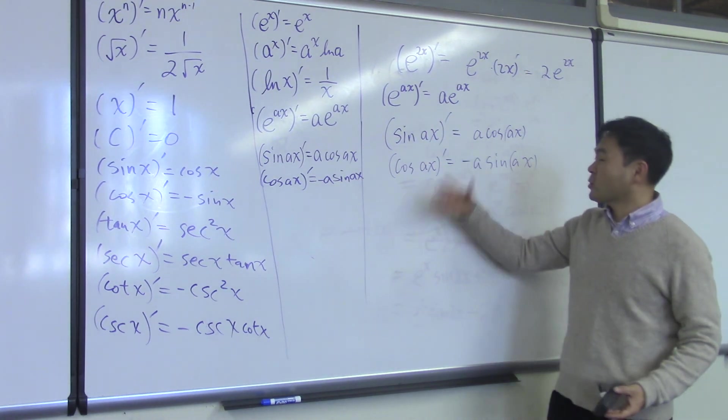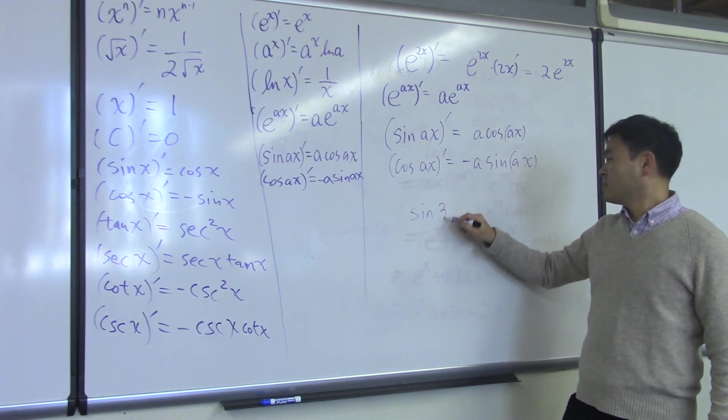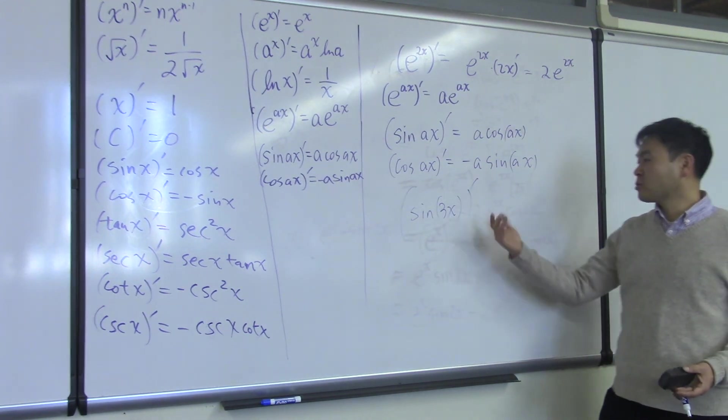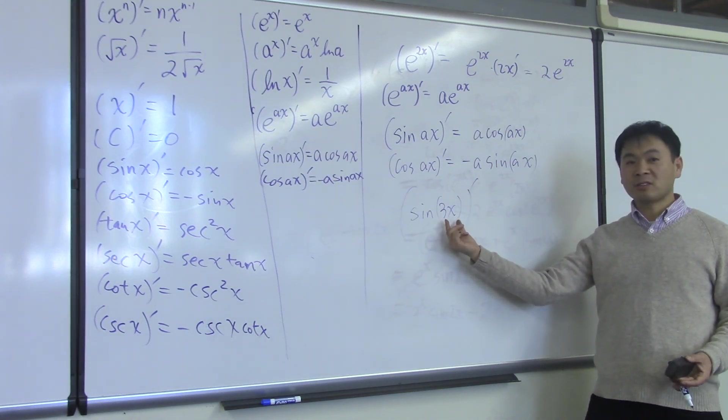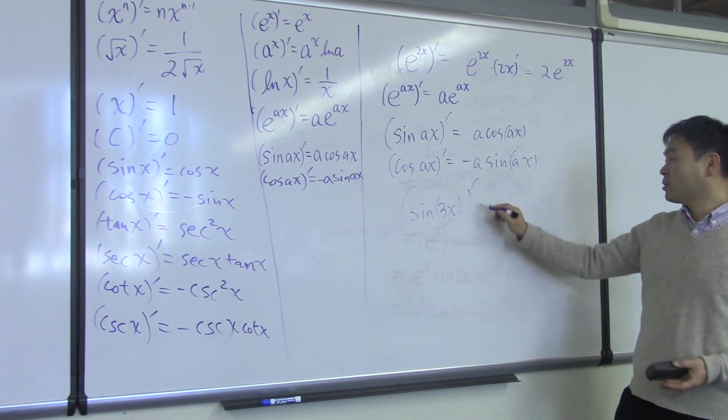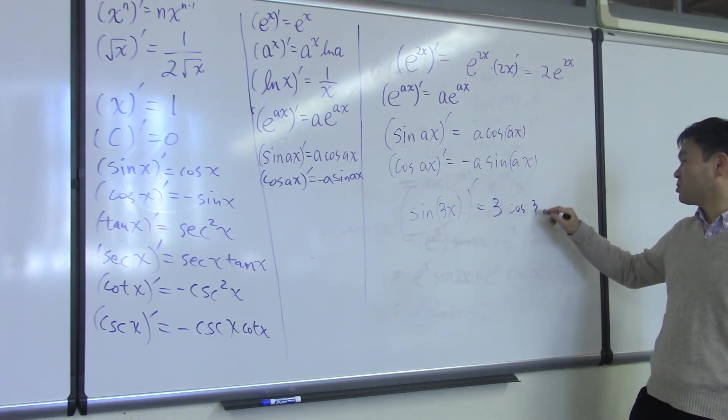So in summary, what happens is that if you have a derivative like this, you should just quickly realize, oh, here's an inside function 3x. When I differentiate that, 3 will pop up. Therefore, I'll have a 3 as a coefficient. That's the way you should think.